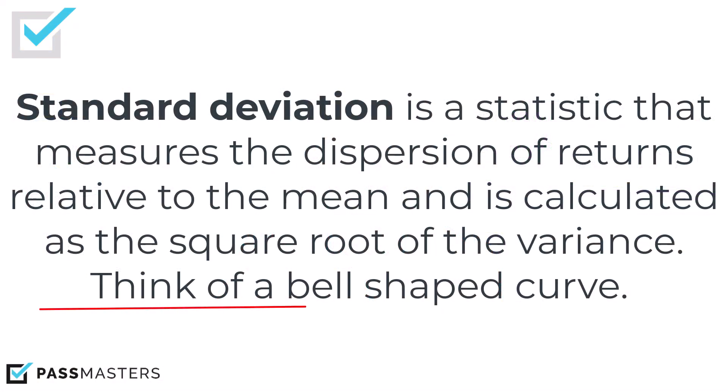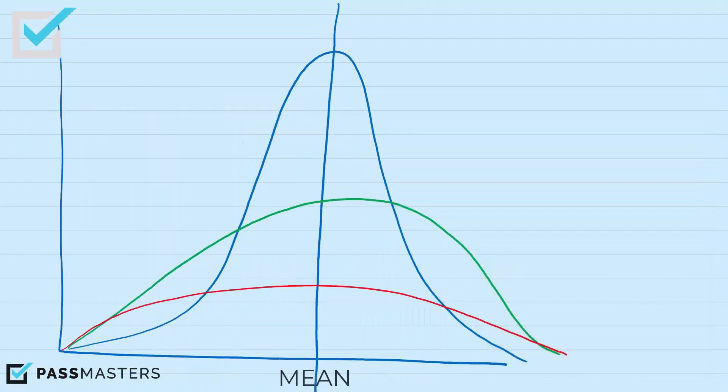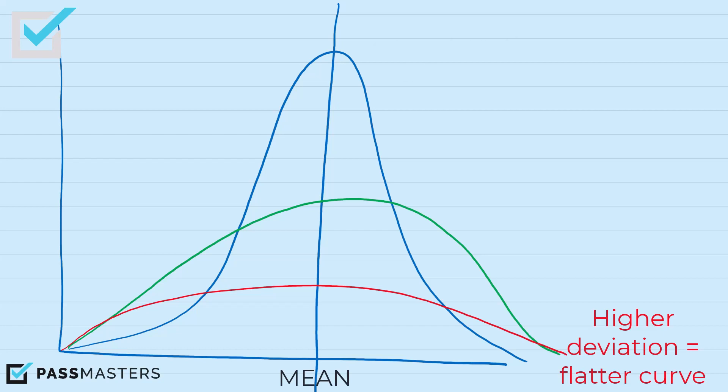Thankfully, we don't have to do the actual math, but we have to understand the concept of standard deviation. Think of a bell-shaped curve. This is an example of a bell-shaped curve. The higher the deviation, the flatter the curve. The lower the deviation, the taller the curve — the less the variability is from the mean. We're looking at past returns, of course.